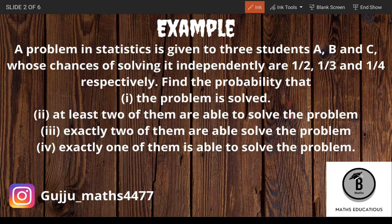A problem in statistics is given to three students A, B, and C, whose chances of solving it independently are 1/2, 1/3, and 1/4 respectively. Find the probability that: the problem is solved; at least two of them are able to solve the problem; exactly two of them are able to solve the problem; and exactly one of them is able to solve the problem.